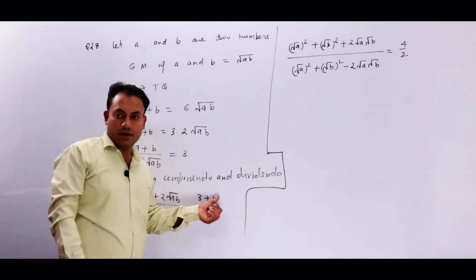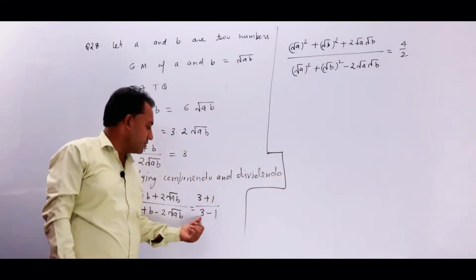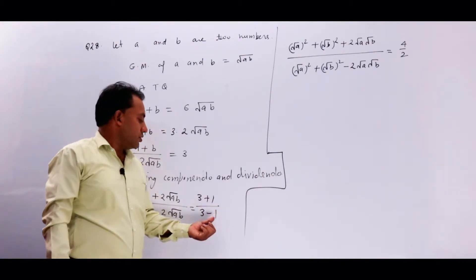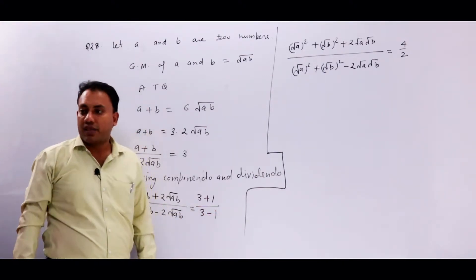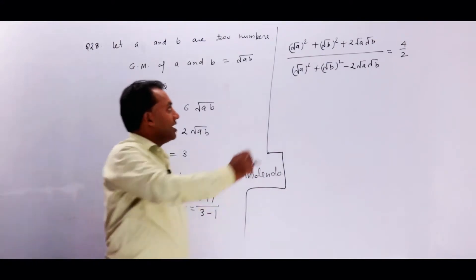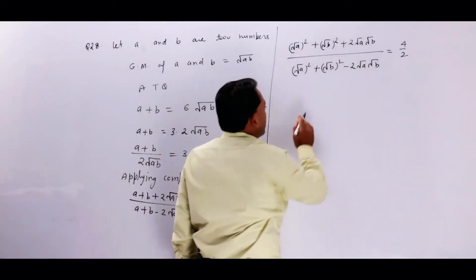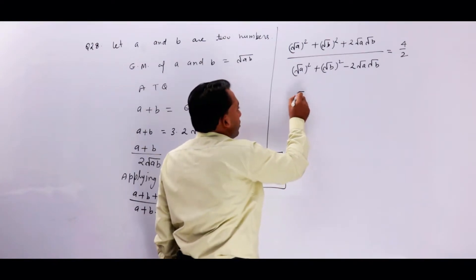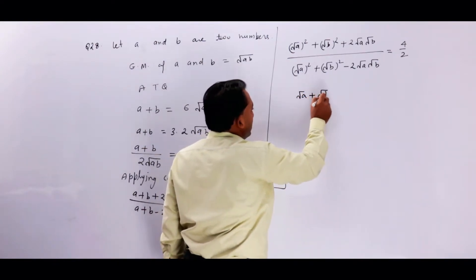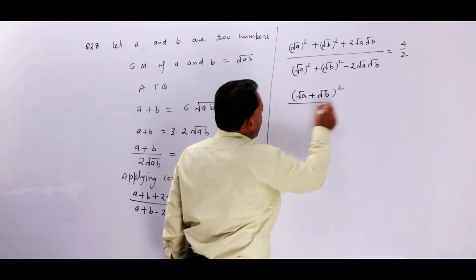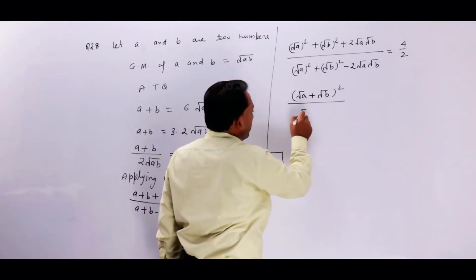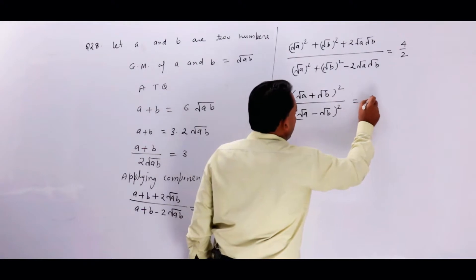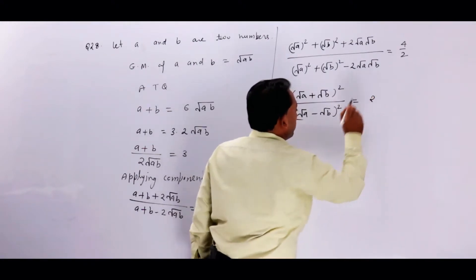ओके, अब बच्चों आप देख रहे हैं कि यह (A + B) का whole square बन रहा है। तो यह कुछ ऐसा हो जाएगा: (√A + √B) whole power 2 upon (√A − √B) whole power 2 = 4/2 = 2।